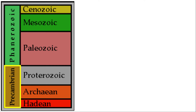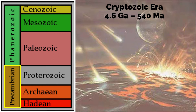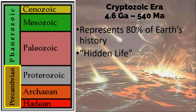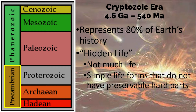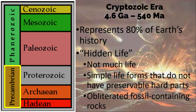Let's start with the Precambrian period, also called the Cryptozoic Era. It ran from 4.6 GA to 540 MA. GA means giga annum, equivalent to 1 billion years; MA means mega annum, equivalent to 1 million years. The Precambrian era represents 80% of Earth's history and is also known as the Eon of Hidden Life due to obscure fossil records. There is very little record of life during this period because: there was not much life; only simple life forms without preservable hard parts may have existed; and the rocks containing fossils would have already been obliterated over time.